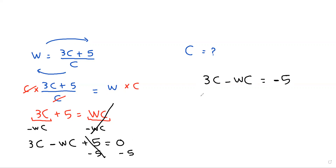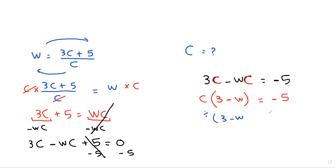Next, take c as a factor from 3c minus wc. When factoring out c, we get c times (3 minus w) equals negative 5. Then divide both sides by (3 minus w), so c equals negative 5 divided by (3 minus w).